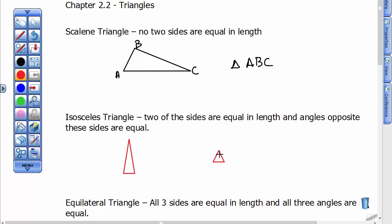This is an example of an isosceles triangle. An isosceles triangle is one where two of the sides are equal in length. We often show that congruency by putting tick marks, so these two sides are equal in length. Therefore, I want you to know that the angles opposite those sides are equal.